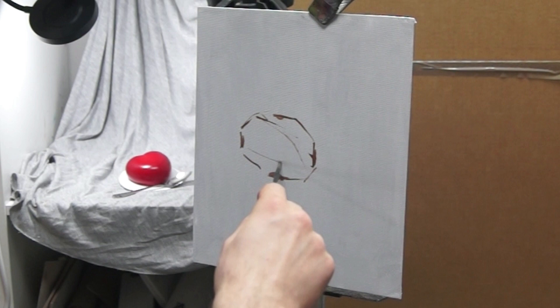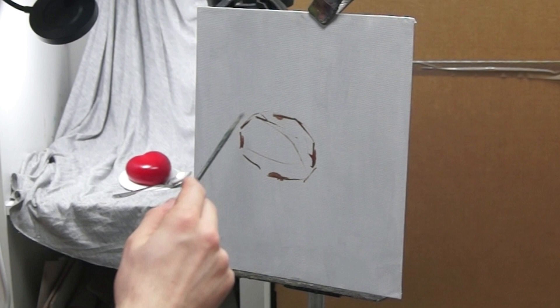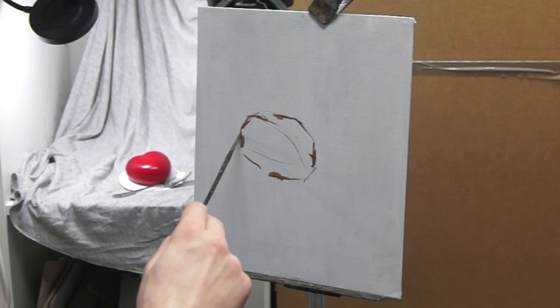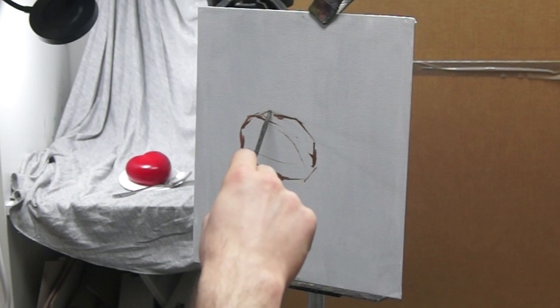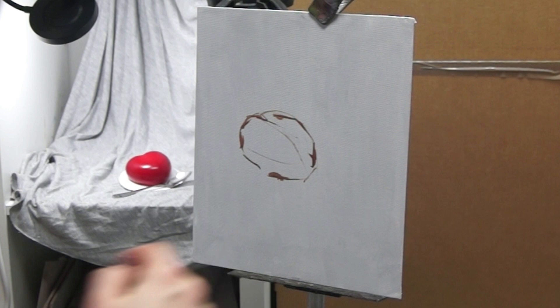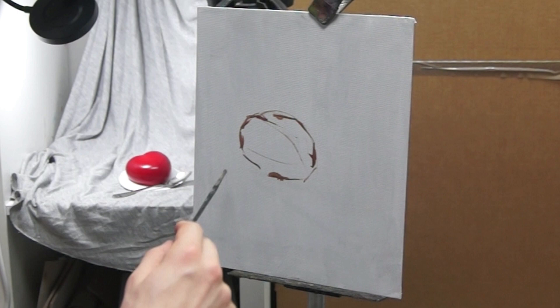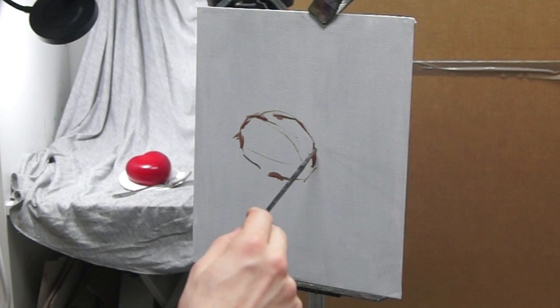I'm sketching the outline of the cake using raw umber paint and I'm trying to think about the structure, the three-dimensional structure of the cake. To help me do this I'm painting a very light center line which is running down the middle of the heart towards the point of the heart. I'm also trying to simplify some of the curves by straightening them slightly as it's easier to move straight lines around than it is to move curves around as straight lines are a lot more specific.